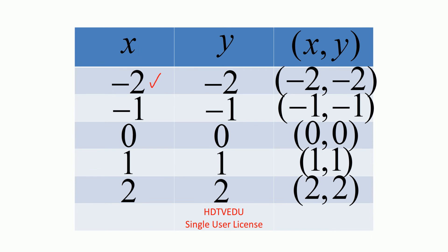When x equals negative 2, y is negative 2, and we get the point negative 2, negative 2. When x equals negative 1, y is negative 1, and our point is negative 1, negative 1. When x equals 0, y equals 0, so our ordered pair is 0, 0. When x equals 1, y is 1, so our point is 1, 1. When x equals 2, y is 2, so our point is 2, 2.